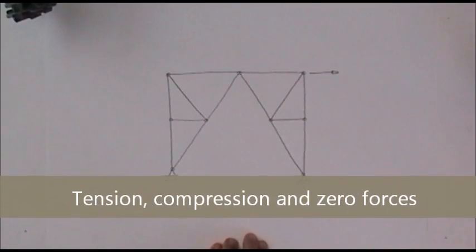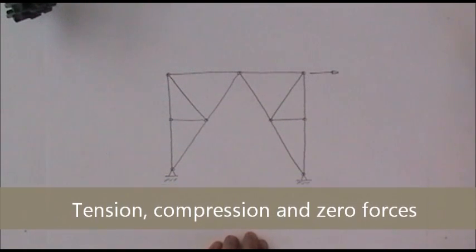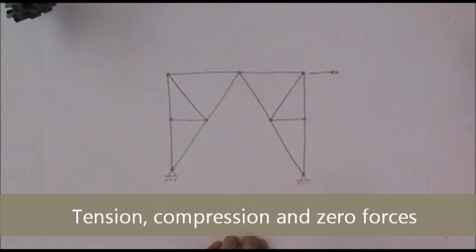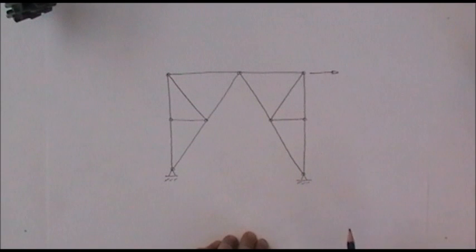This is tension, compression, or zero in a truss, a particular example. Right, let's consider a particular example where we're trying to work out which members are in tension, which are in compression, which carry zero force.